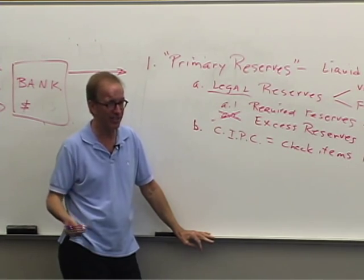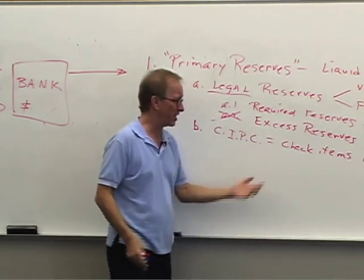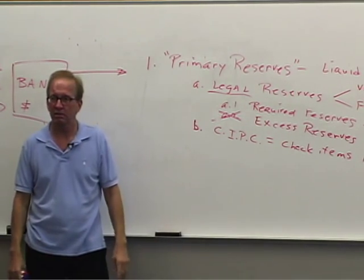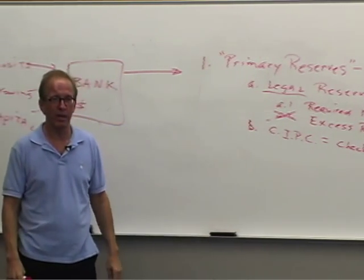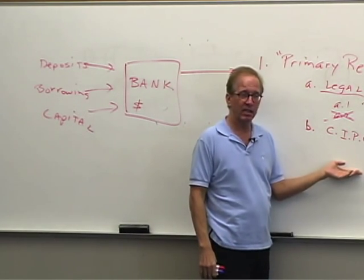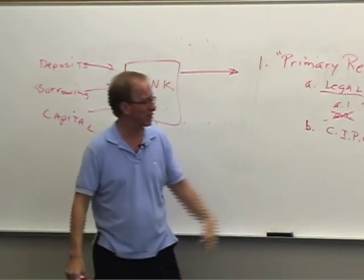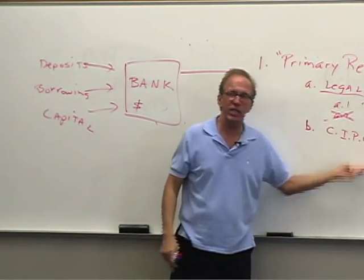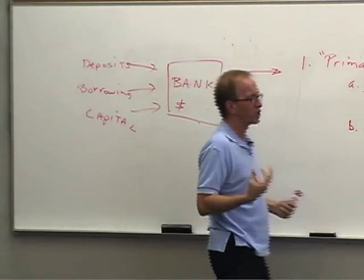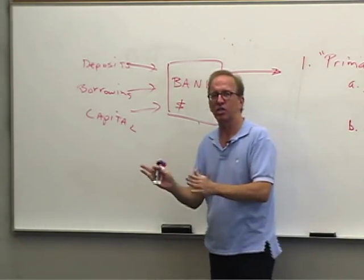Banks don't like CIPC because they have to wait for their money and earn no interest on it. The only way to avoid it would be to refuse checks, but that's not an option. So banks live with it. And since more checks keep coming in, there are always some check items in the process of collection at any given time.